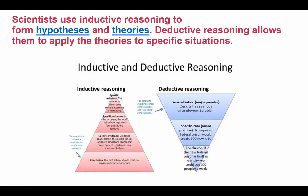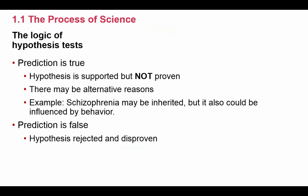Scientists use inductive reasoning — going from specific to general — to help formulate hypotheses and theories. Deductive reasoning — going from general to specific — allows them to apply these to specific situations. Both forms of reasoning can be used in science. Also keep in mind: if an experiment supports what you predicted, it supports your hypothesis but does not necessarily prove it, because there might be alternative reasons why your hypothesis was supported.